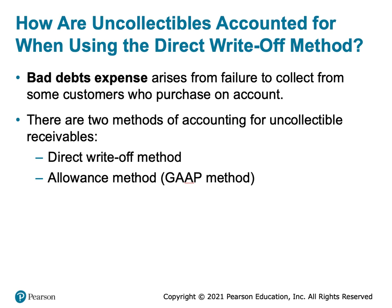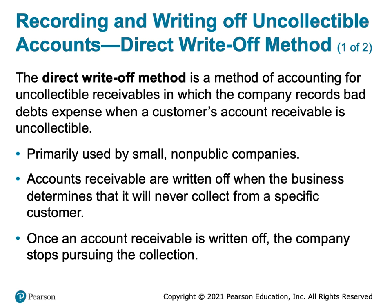There's the direct write-off method, which we're going to describe in this presentation, and then there's the allowance method, which is the GAAP-approved method. It's the one that should be used more commonly and must be used by publicly traded companies. The direct write-off method might be used by smaller companies and companies with fewer accounts receivables — it's primarily used by small non-public companies.